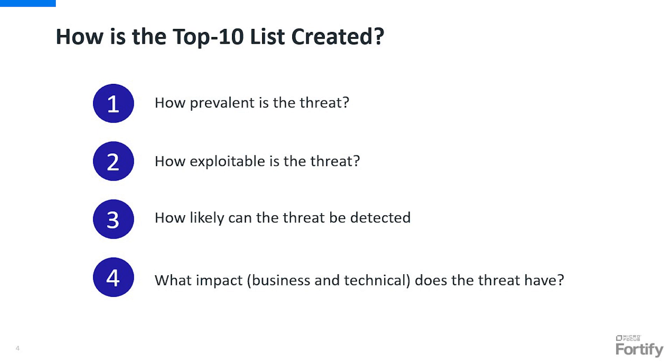On the business side, they look at things like financial impacts if a threat were exploited, and reputation impact — are we going to be all over the news if our application gets exploited? We don't want to be that company in the news when we've had a breach. On the technical side, they look at whether it breaks the application or prevents it from doing what it needs to do. All of those things together determine what the top 10 vulnerabilities or risks are.